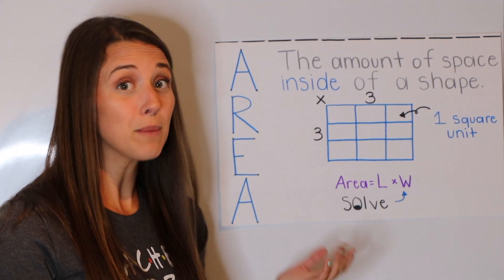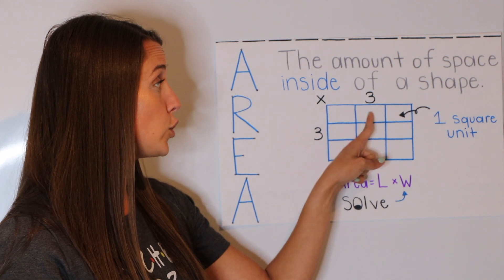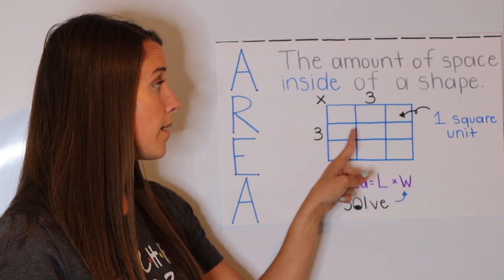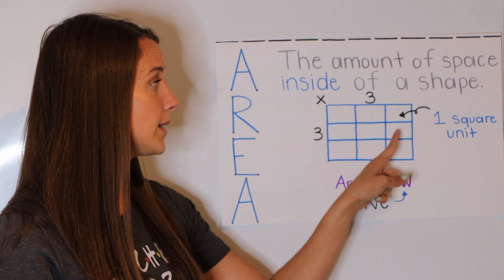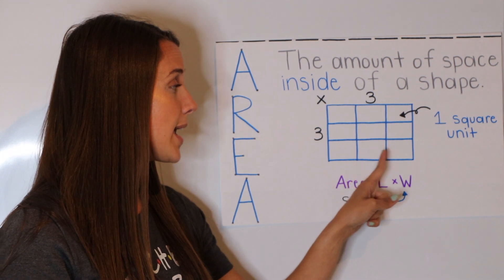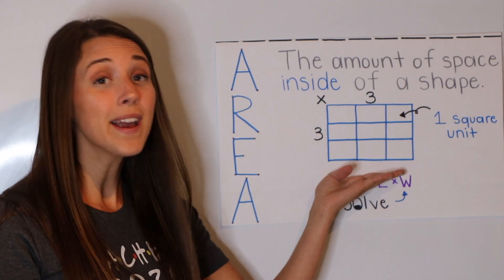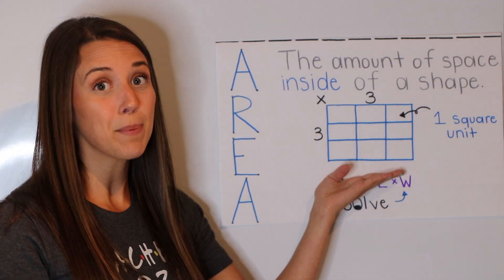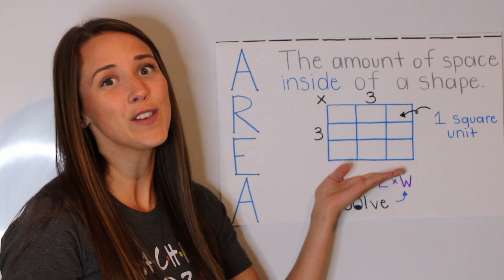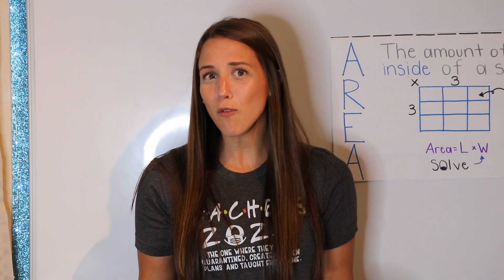So let's count them together: one, two, three, four, five, six, seven, eight, nine. So the area of my shape is nine square units. Are you guys ready to solve one together?